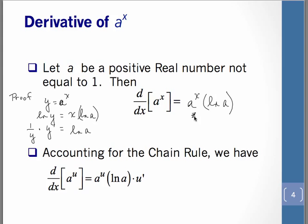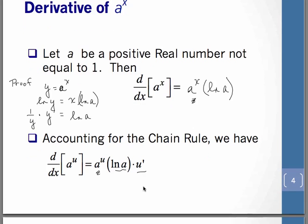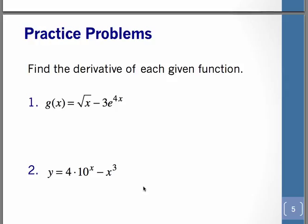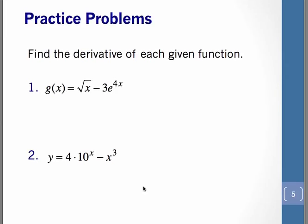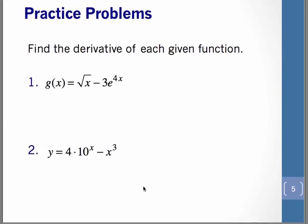Once again, though, you'll run into occasions with the chain rule. You'll have the same basic rule, so you'll have a to the u times natural log of a. But then you just need to multiply by the derivative of the exponent. So let's take a look at a few examples, and all we're doing is doing straightforward derivatives.